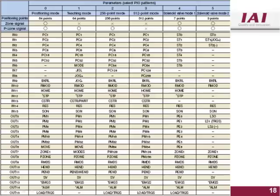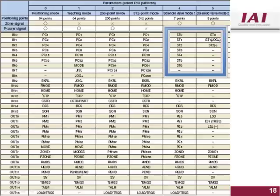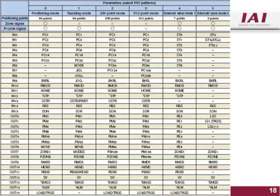The number of positions available is set by the PIO pattern, which is set in parameter number 25. This chart shows the standard ACON, PCON, and SCON PIO patterns. PIO patterns 0 through 3 need a binary input position number and a start pulse to move to the commanded position. Patterns 0 and 1 have 64 available positions; pattern 2 has 256 available positions; pattern 3 has 512 available positions. PIO patterns 4 and 5 are solenoid valve mode types, meaning there is a dedicated input for every position number. Pattern 4 has 7 available positions and pattern 5 has 3 available positions.